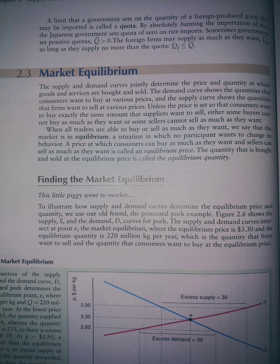The quantity that is bought and sold at the equilibrium price is called the equilibrium quantity.